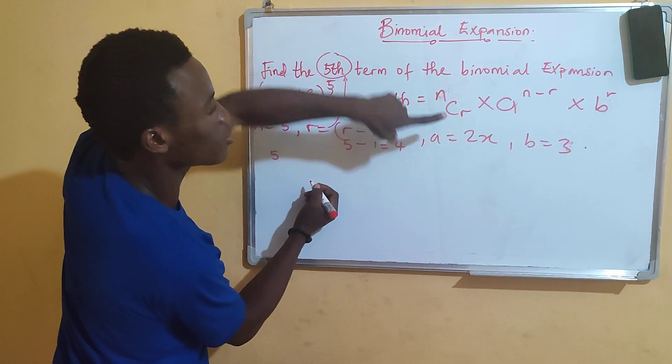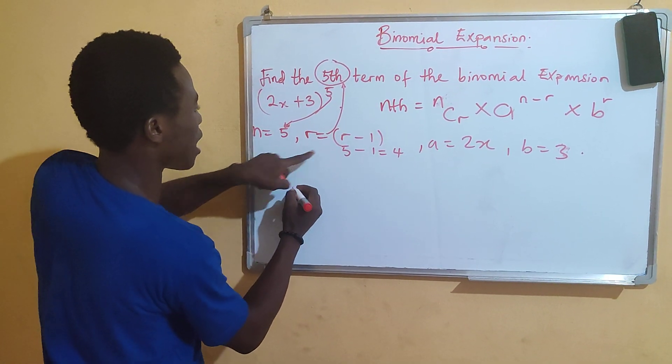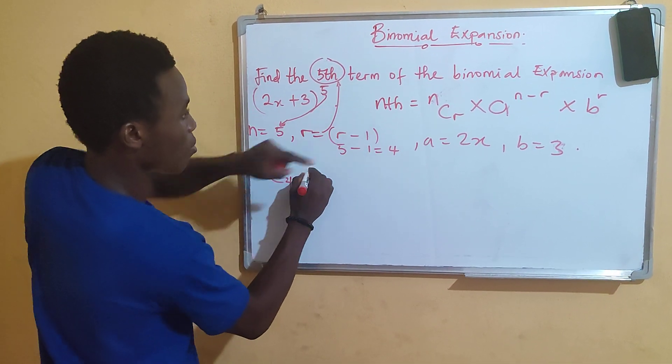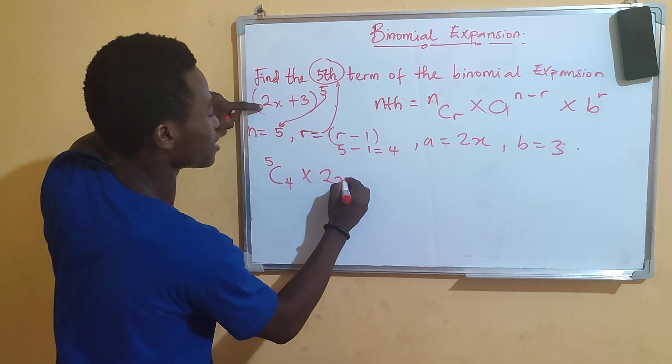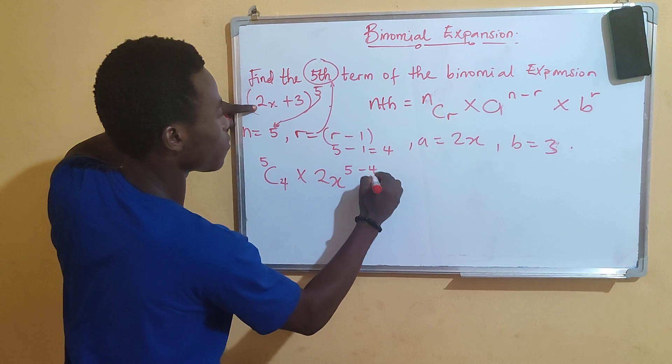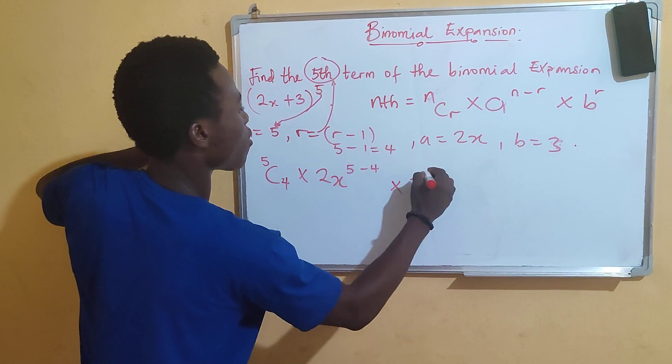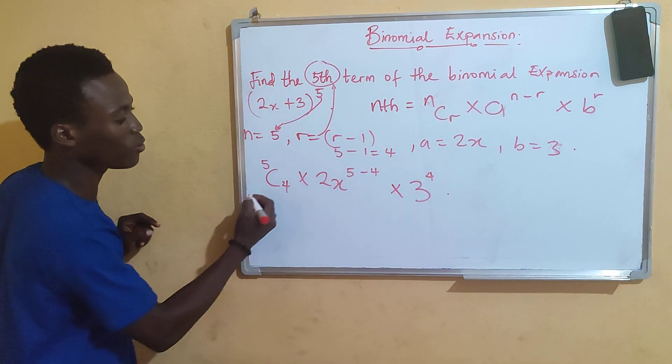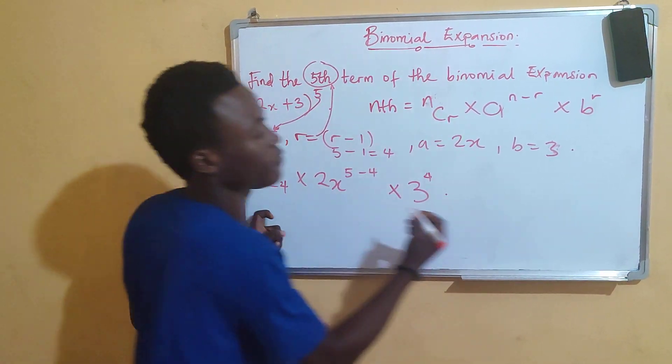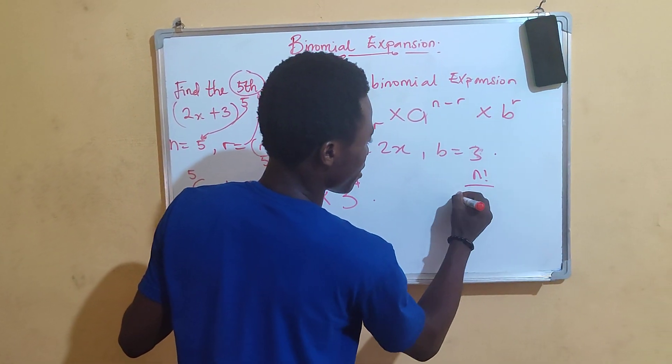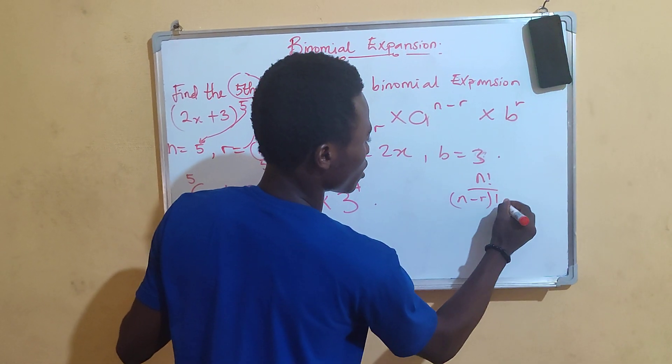We have n combination r which is 5 combination 4. Multiply by our a is 2x raised by 5 minus 4. Multiply by our b is 3 raised by our r which is 4. From here now, 5 combination 4. We have n factorial divided by n minus r factorial r factorial.